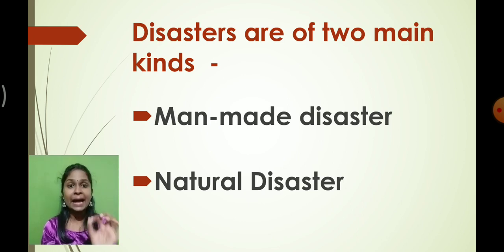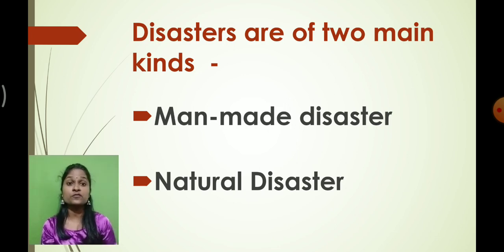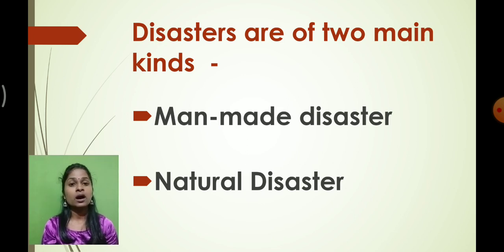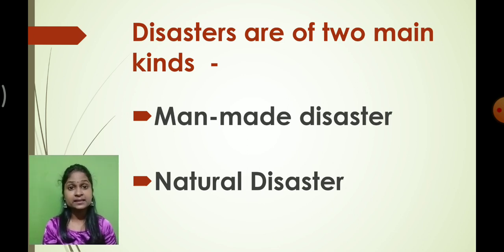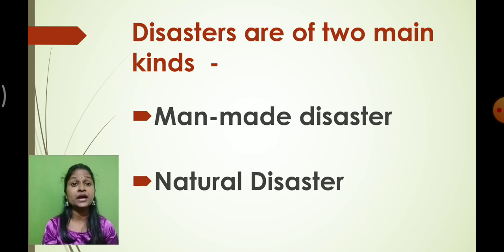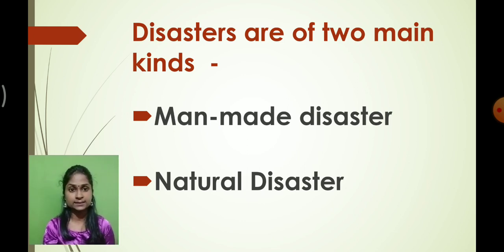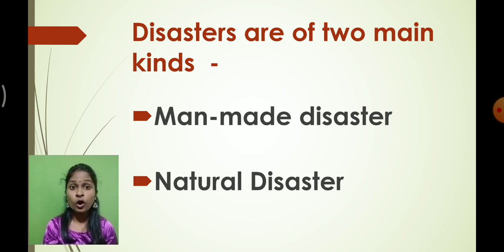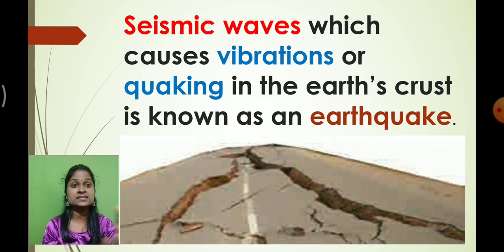A disaster is a sudden event that causes large-scale damage to life, property, and the social aspect of a nation or society. There are two types of disaster: natural disaster and man-made disaster. Natural disasters are caused by natural forces, while man-made disasters are caused by human activities — such as forest fire, building collapse, oil spill, war, and terrorism.